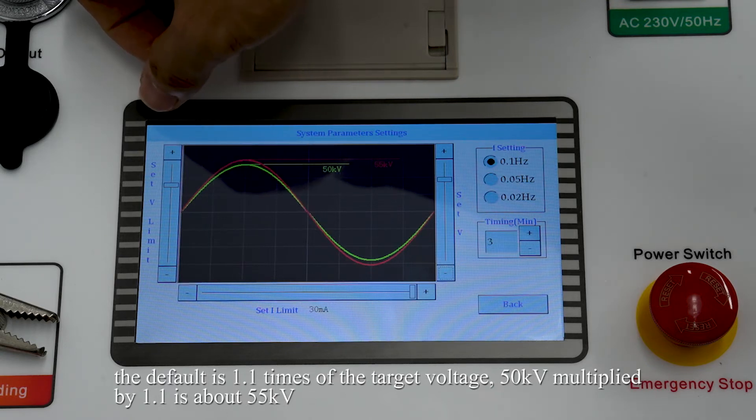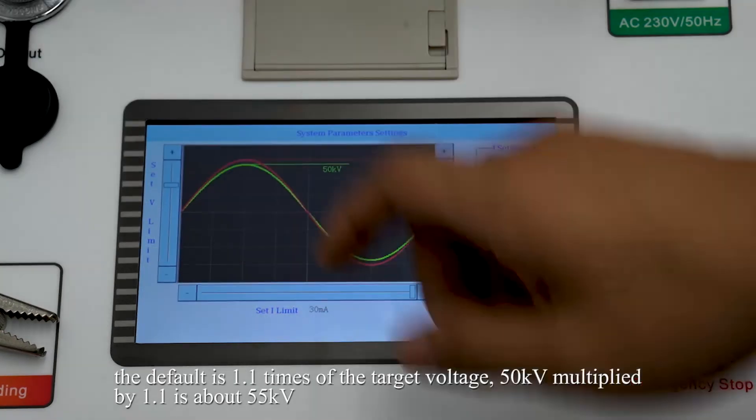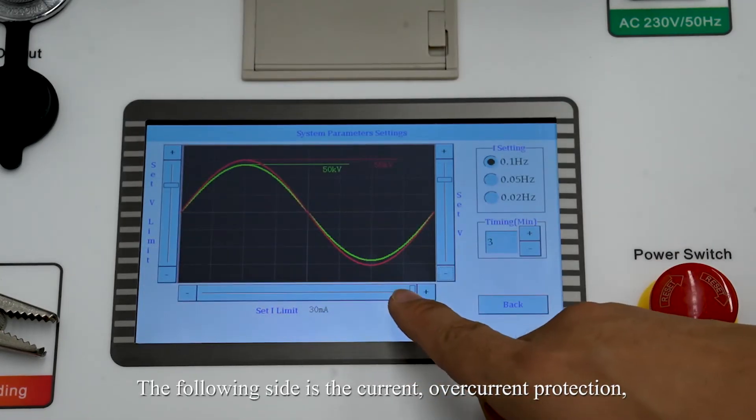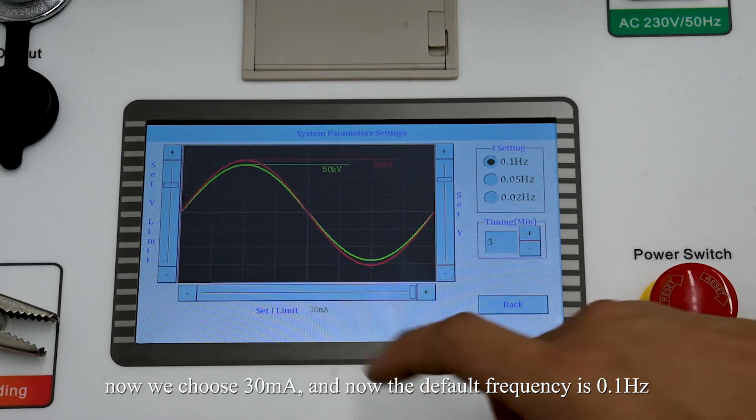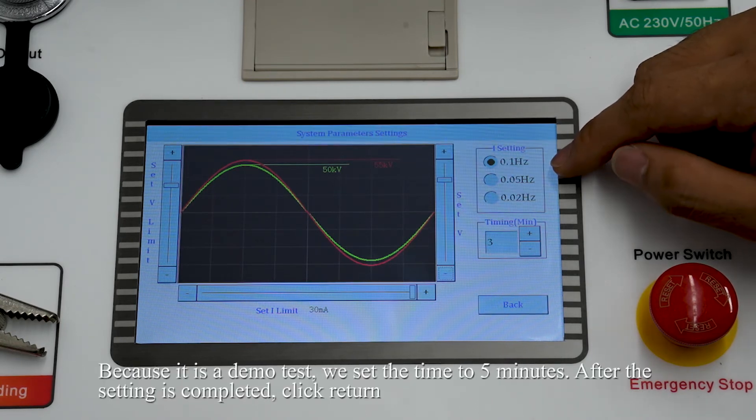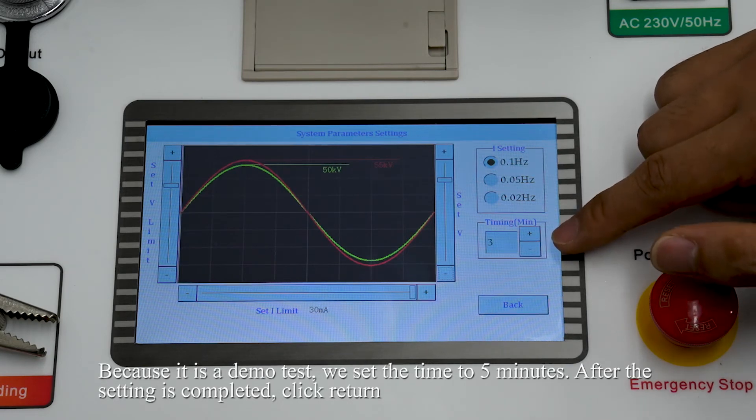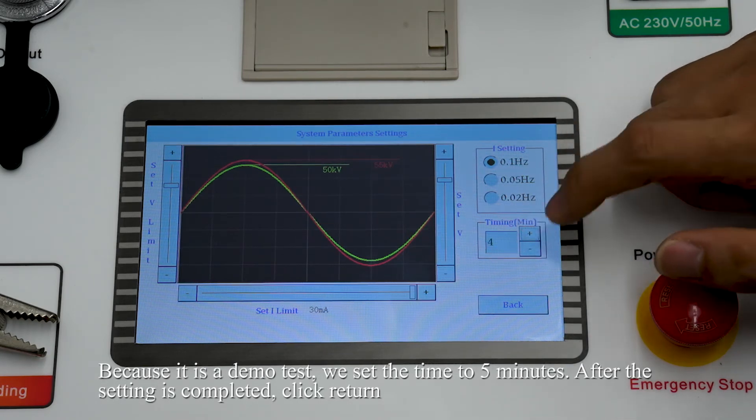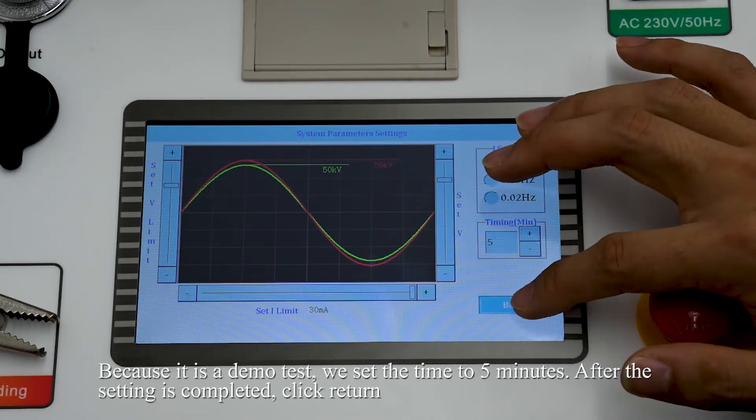The left side is the current over-current protection. Now we choose 30 mA, and now the default frequency is 0.1 Hz. Because it is a demo test, we set the time to 5 minutes. After the setting is completed, click return.